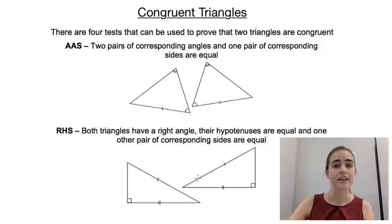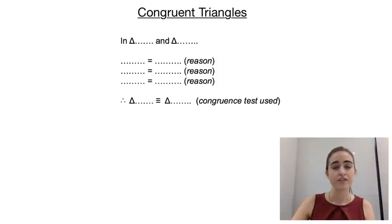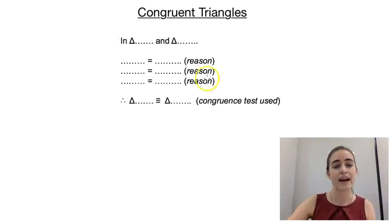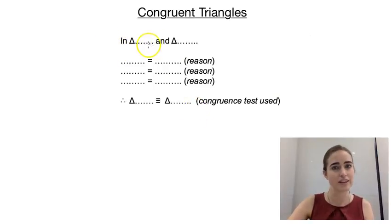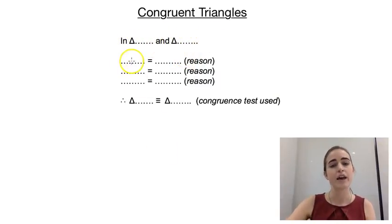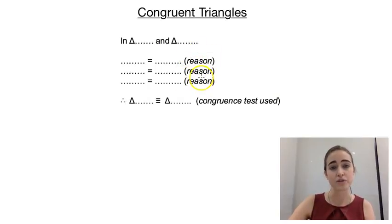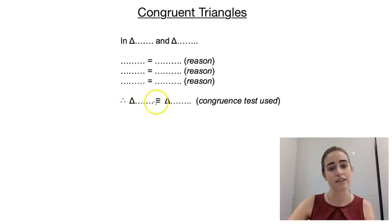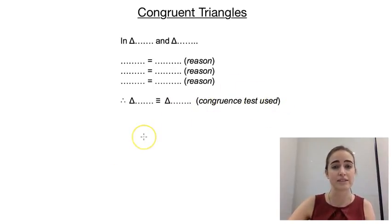So there are four tests. Let's have a look at how we write our proofs. Every time we write a proof for congruent triangles, it's set out in five lines. The first line says 'In triangle' followed by the three letters of each triangle. Then we list three things that are equal — sides or angles — with a reason for each. The last line is our conclusion: 'Therefore, triangle is congruent to triangle,' naming the congruence test used.